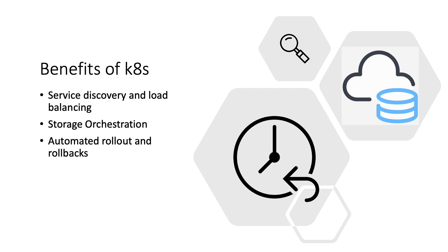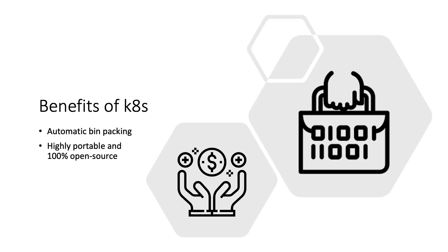Automated rollout and rollback is another benefit. The desired state of containers can be described using Kubernetes, and the actual state changes to the desired state at a controlled rate, allowing us to roll forward or roll back easily. If we send an update to our Kubernetes cluster and discover a problem with that version, we can simply run a command and all new clusters will revert to the old instances without any downtime.